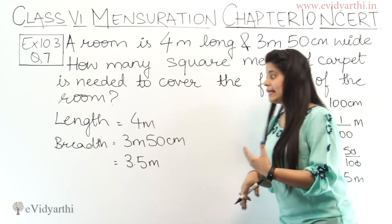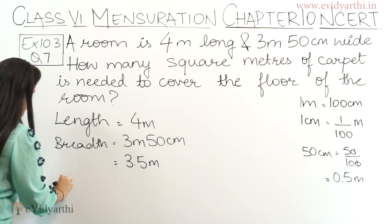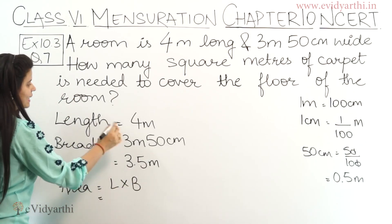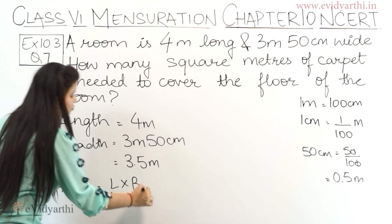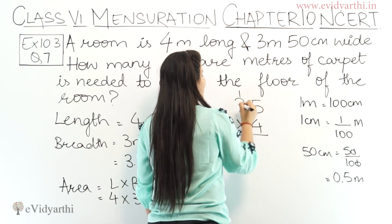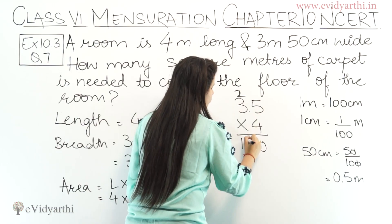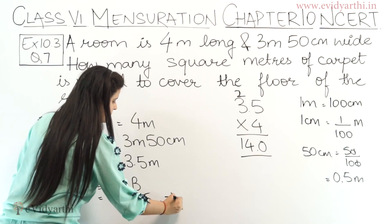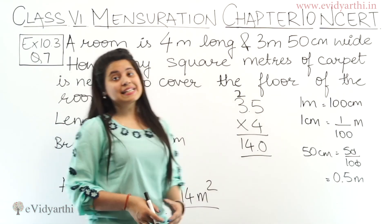So breadth aa gayi 3.5 meters. Now 3 meter plus 0.5 meter equals 3.5 meters. Length hai 4 meters. So let's find the area. The area will be length into breadth — so 4 meters into 3.5 meters. 4 into 5 is 20, 4 into 3 is 12 plus 2 is 14. Saath mein point lag jayega yahaan pe. So ye ho gaya 14 meter square. So this much carpet is required.